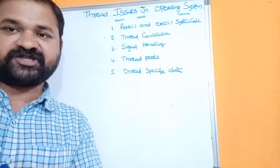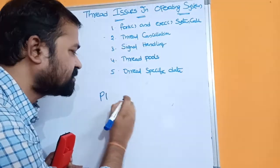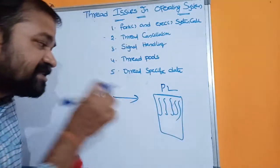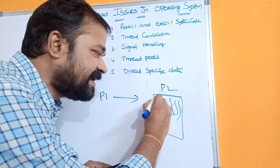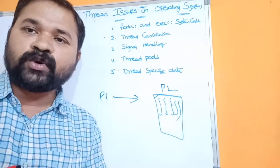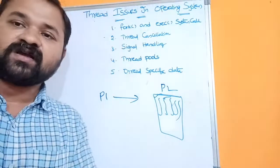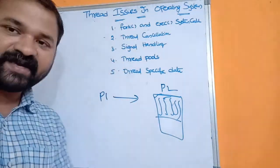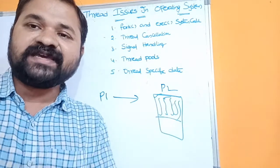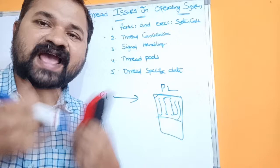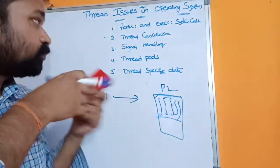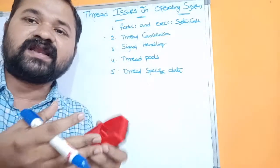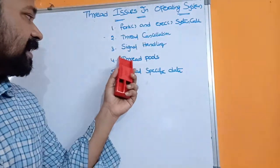The key point in signal handling is: when a process sends a notification, to whom should it send it? Assume P1 wants to send a signal to P2, and P2 contains 5 threads. To which thread should the notification be sent — to a specific thread, a set of threads, or all threads? Which thread will handle that signal? Depending upon the problem, we decide which thread or threads will handle the signals.